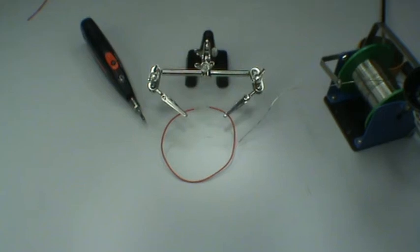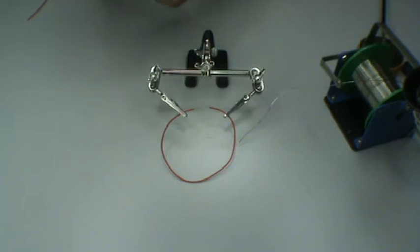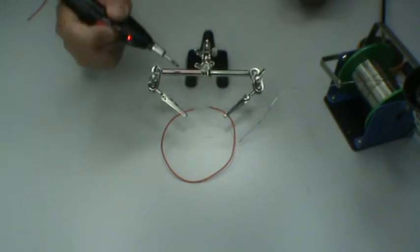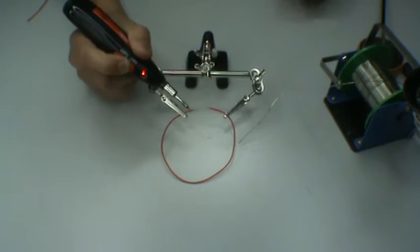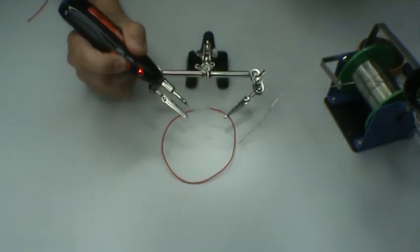The third test is to solder a 24 gauge wire. First, reheat the iron while applying flux to the ends of the wire.